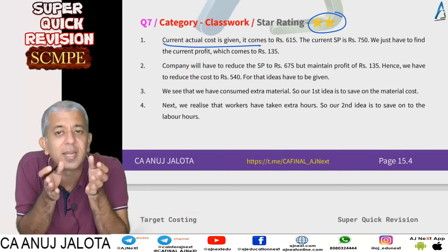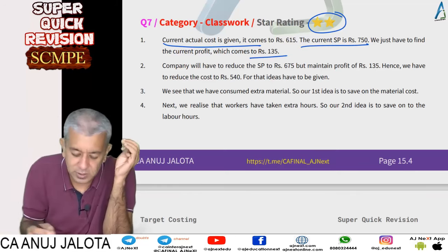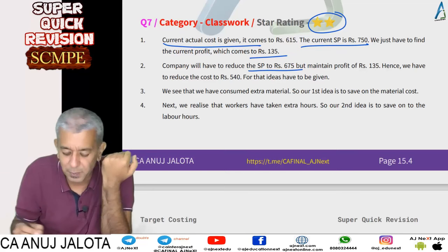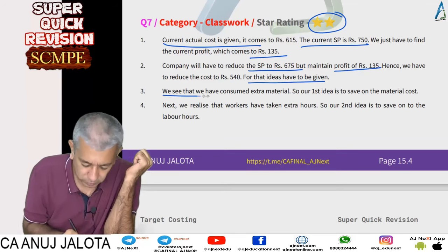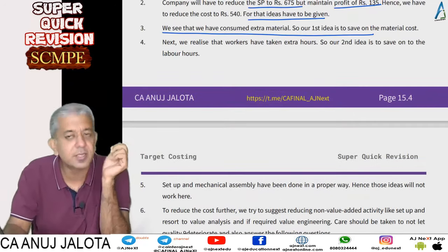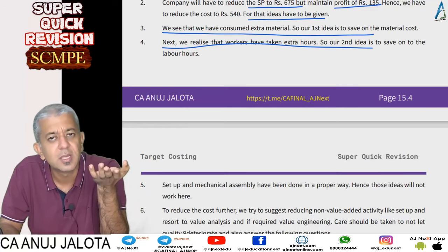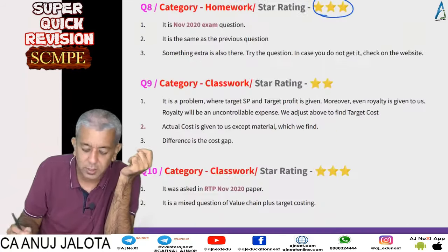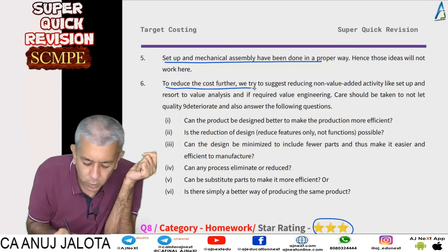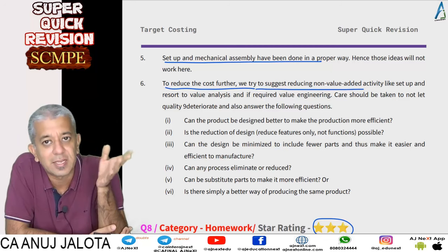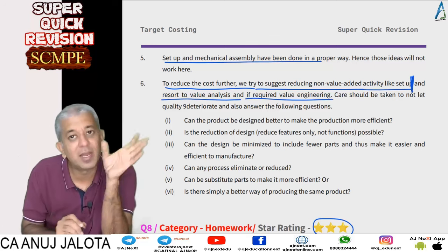To summarize question seven: current actual cost is 615, current selling price is 750, so current profit is 135. The company wants to reduce selling price to 675 to meet competition but maintain a profit of 135, so target cost becomes 540. Ideas: first, be efficient with material; second, reduce labor hours. Machine setup and mechanical assembly were done efficiently, so those ideas won't work. Suggest reducing non-value-added activity like setup, and resort to value analysis and value engineering.